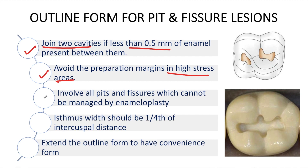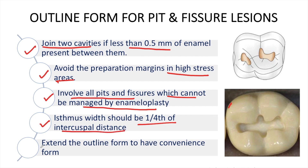We should involve all pits and fissures which cannot be managed by enameloplasty. The isthmus width should be one-fourth of the intercuspal distance. We should extend the outline form to have the convenience form — this means that in the interest of conserving the tooth, we should not make the outline form too narrow to work upon with instruments during both tooth preparation and restoration.